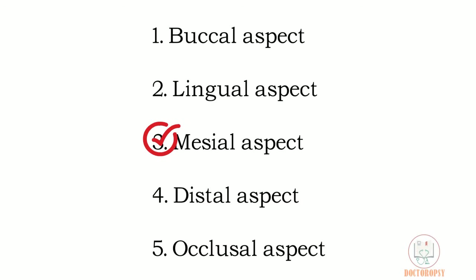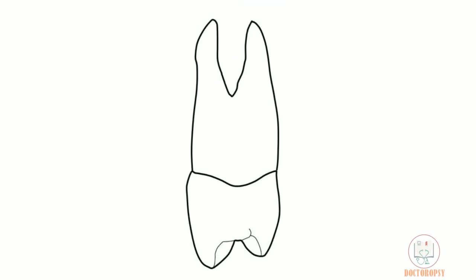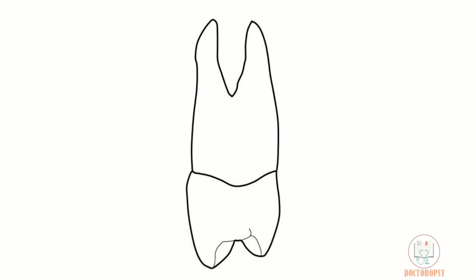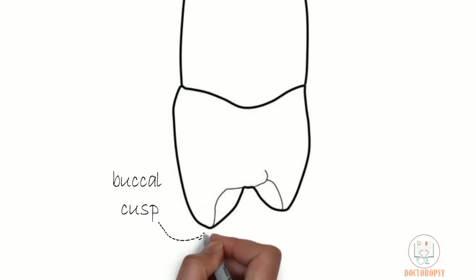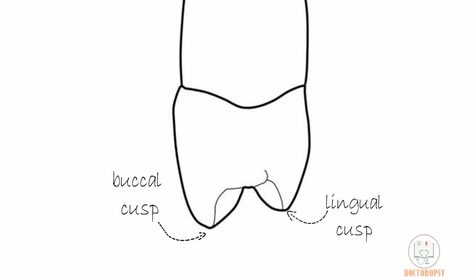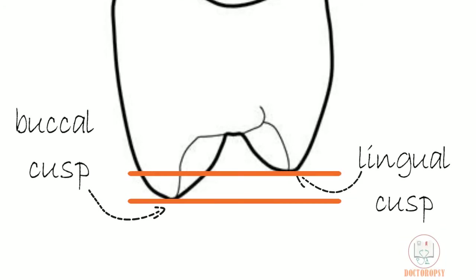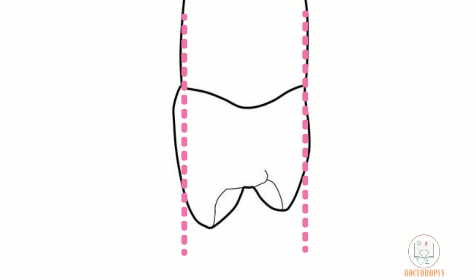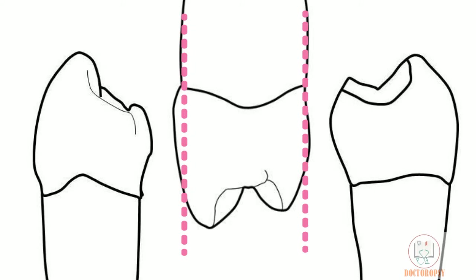From the mesial aspect, the outline form of the crown is trapezoidal, but unlike the buccal aspect, the longer parallel side is towards the cervix and the shorter side is towards the cusp. Both the buccal cusp and lingual cusp are visible. The lingual cusp is slightly smaller, around 1–2 mm, than the buccal cusp. The tips of the cusps are within the confines of the root trunk. This is an important difference from mandibular premolars, where the lingual cusp lies outside the confines of the root.